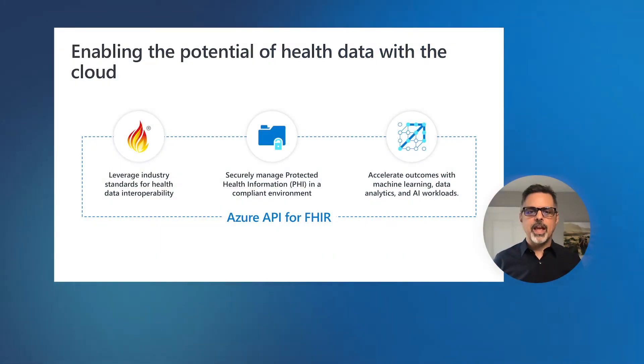The Azure API for FHIR is designed to securely manage protected health information, or PHI, in an environment that complies with all regulations for PHI in whatever region it's deployed into. We're currently deployed into regions all around the world, supporting compliance requirements in all of those regions. The goal of creating the Azure API for FHIR was really to accelerate the outcomes you can get from things like machine learning, advanced analytics, and AI workloads. If you can bring data from disparate systems into a common standardized format like FHIR and bring it into a single common dataset in the Azure API for FHIR, then you can start to explore what you can do with that data.